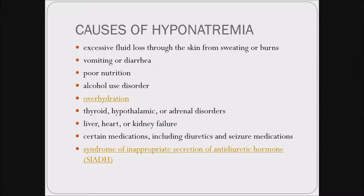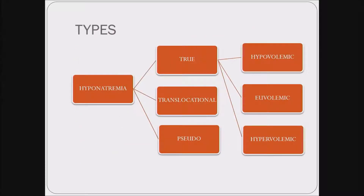What are the causes of hyponatremia? Most importantly, it is excessive fluid loss that can happen because of sweating, burns, vomiting, diarrhea, poor nutrition, involvement of liver, heart or kidney whereby fluid balance is affected. Or when there is thyroid abnormality or adrenal disorders causing Addison's disease, those things can also present with hyponatremia. Whenever a patient presents with these complaints or involvement of these organ systems, keep one differential diagnosis in mind: there might be some electrolyte imbalance. But is it that simple? No — hyponatremia is not so simple.